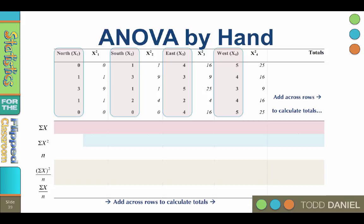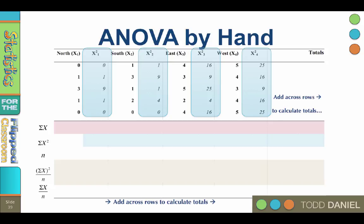Then we will create an x squared column for each of these existing columns. The x squared column was created by squaring each value in the corresponding x column.